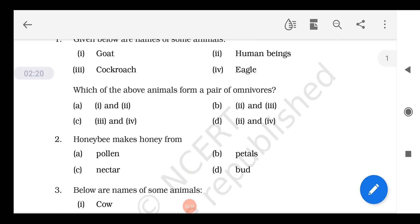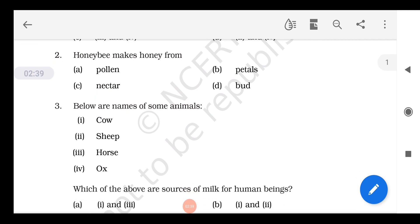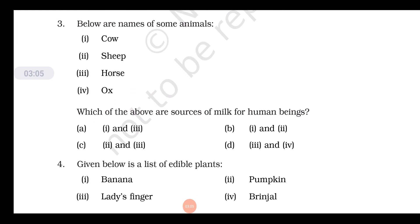Question number two: honey bee makes honey from nectar. Nectar is the juice which is present inside the flower which honey bee sucks. Question number three: below are the names of some animals, and we have to tell which of the above are sources of milk for human beings. From cow we get milk, from sheep also we get milk, but horse and ox are used in agriculture and transport purposes. So option one and two, option B is the correct one.